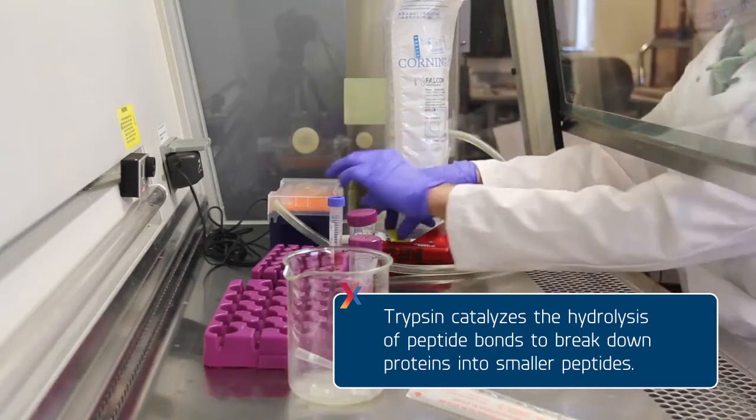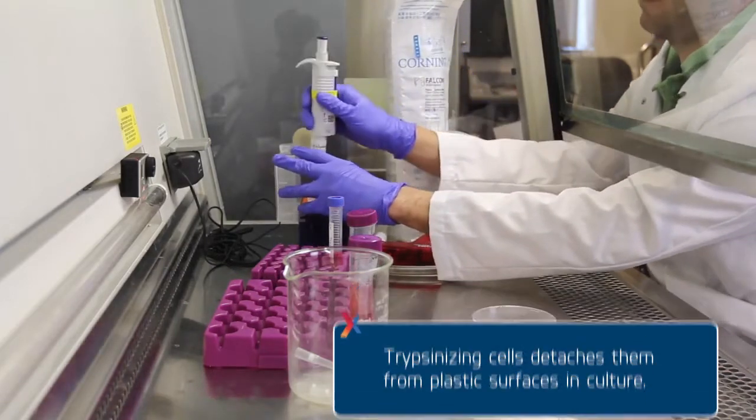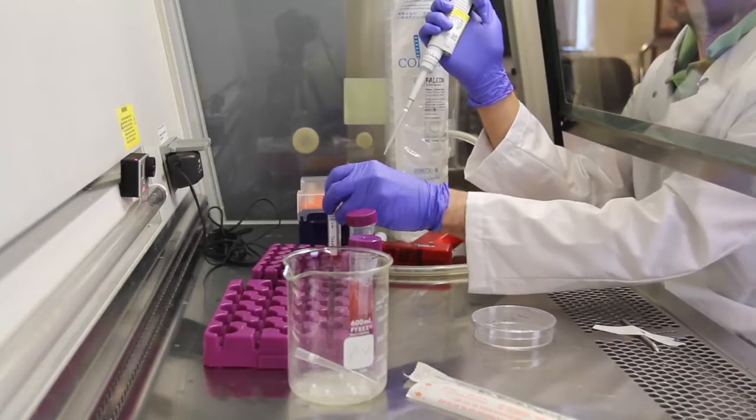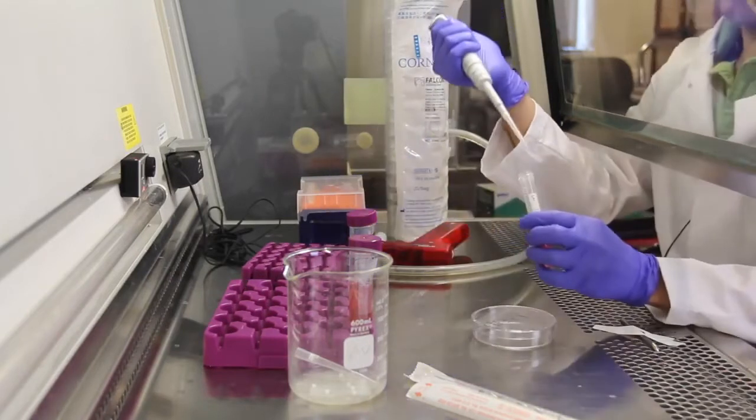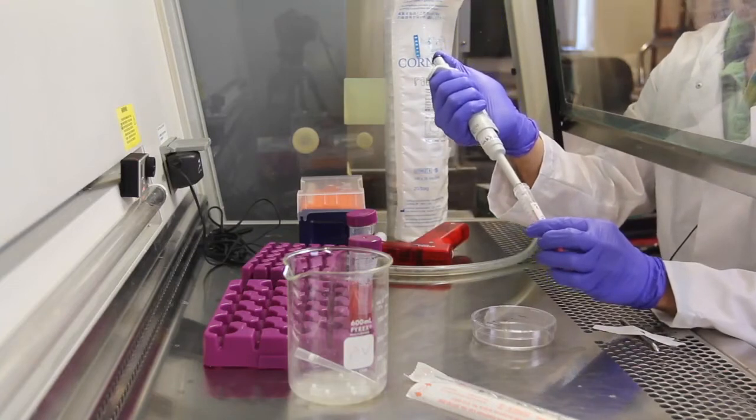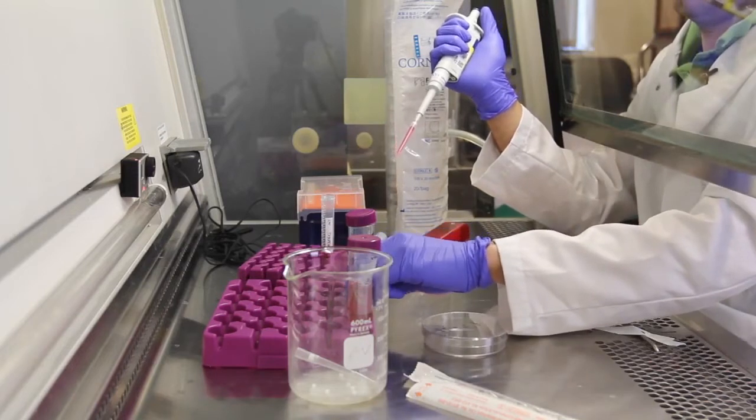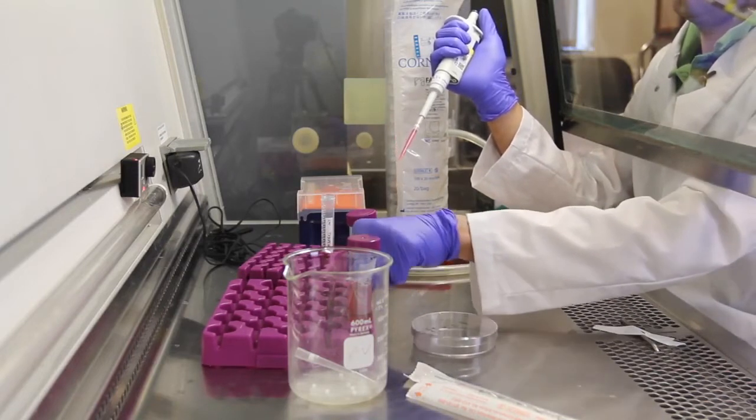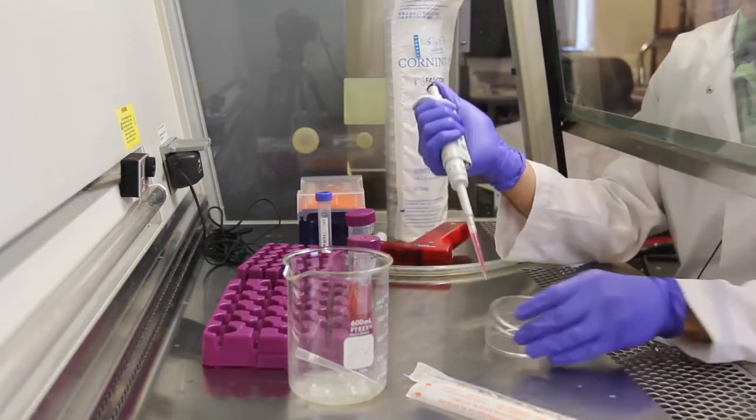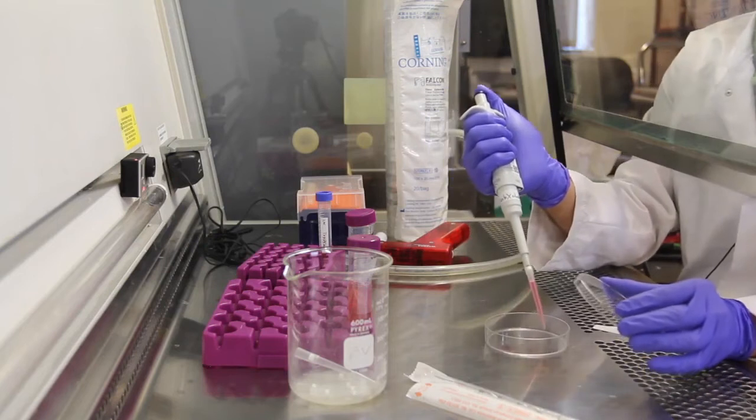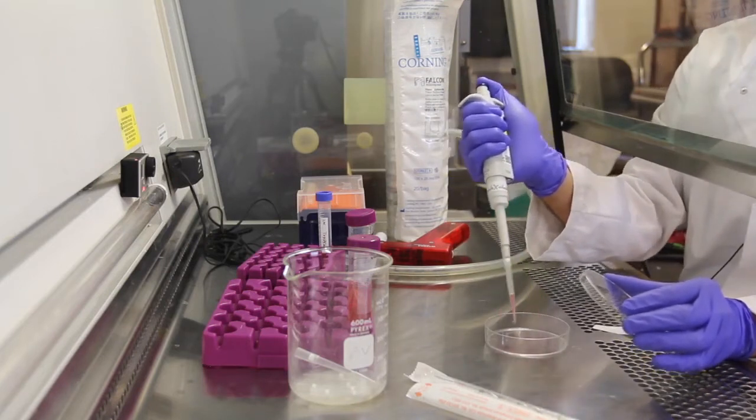Loosen the cap, take a one milliliter pipette including tip, open the cap, flip it around, and take one milliliter of trypsin. Close the tube and add the trypsin in a dropwise fashion, or close to a dropwise fashion, to make sure it gets good coverage on the entire plate.